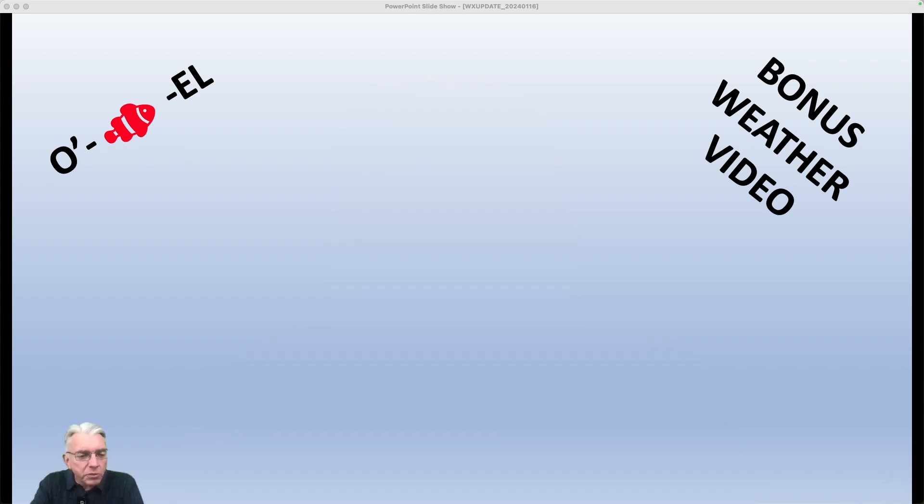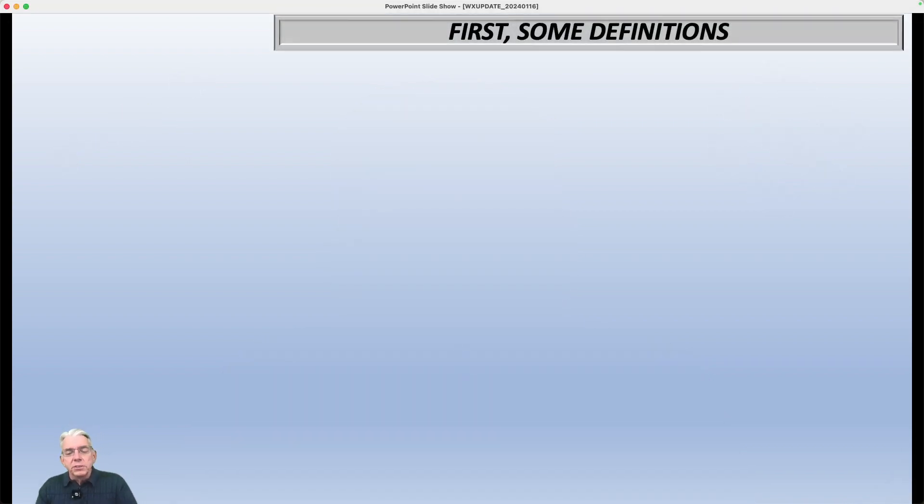So let us move on here and we're first going to start off with some definitions. And the first one is what is a front? Well, it's a transition zone between two air masses of different density. This actually comes from the American Meteorological Society glossary.